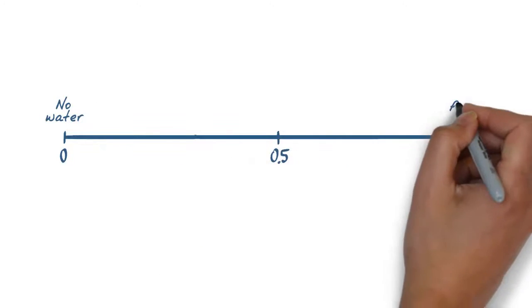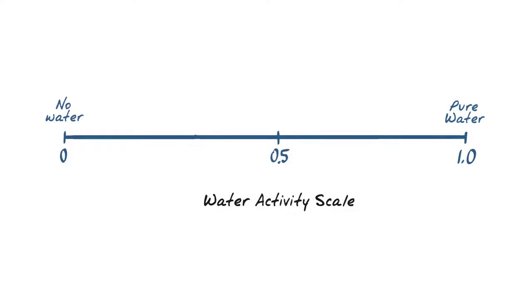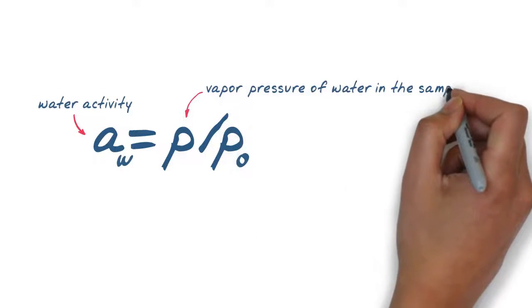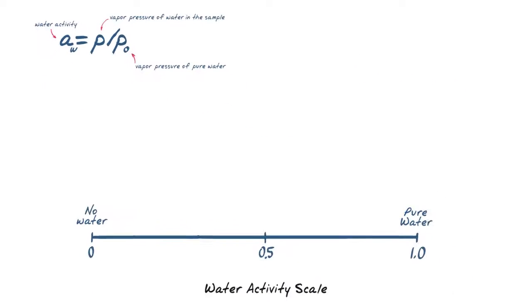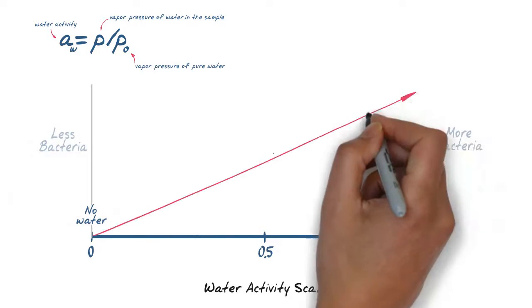Water activity is based on a scale of 0 to 1.0, with pure water having a value of 1.00. It is defined as the vapor pressure of water over a sample divided by the vapor pressure of pure water at the same temperature. In other words, the more unbound water we have, the more likelihood we have of microbial spoilage.